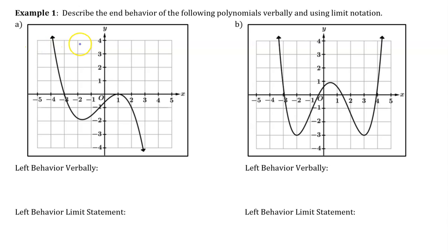For example 1, we are going to describe the end behavior of these polynomials both verbally and using limit notation. Informally, you can see that this first function, example a, rises on the left and falls on the right.